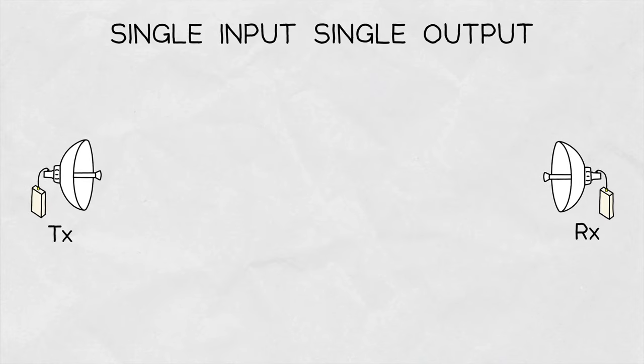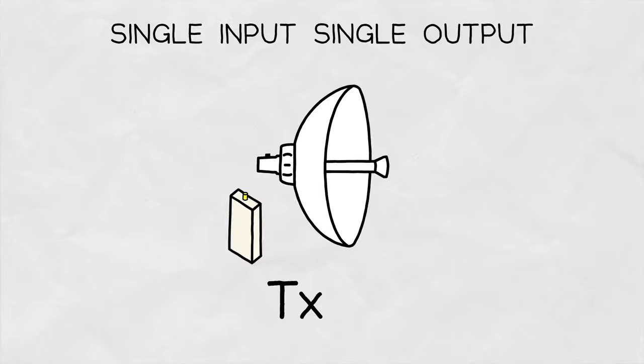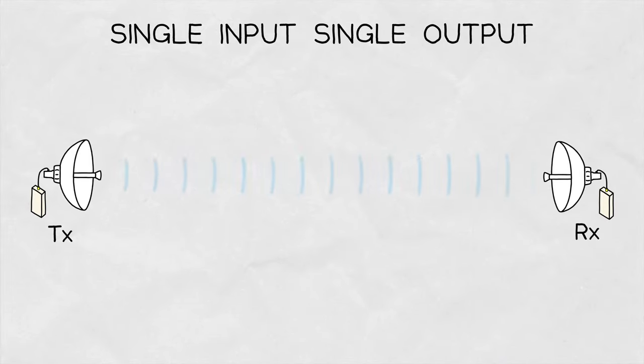Consider an example of a single input single output link, with a one channel radio connected to a single polarization antenna, transmitting RF signal to the same setup at the receiving site.